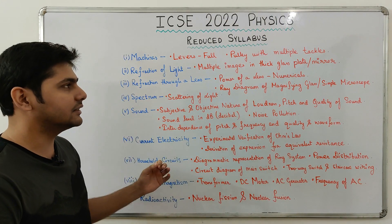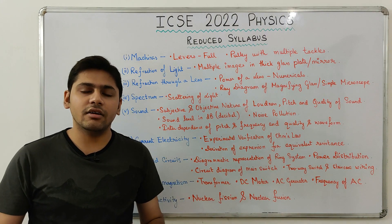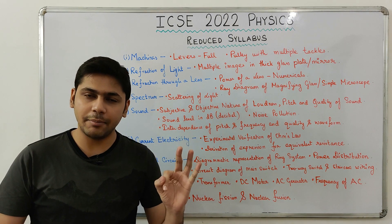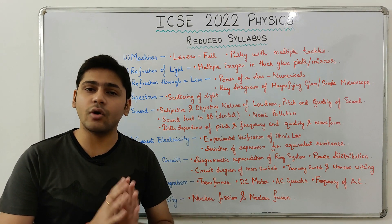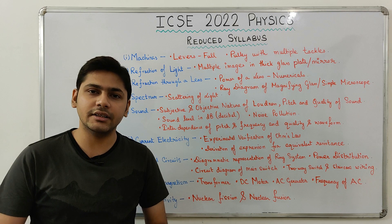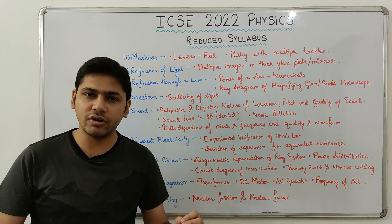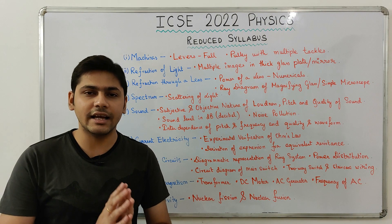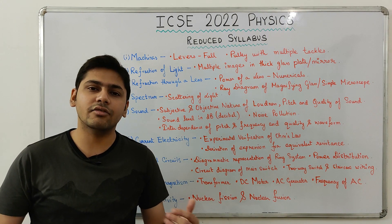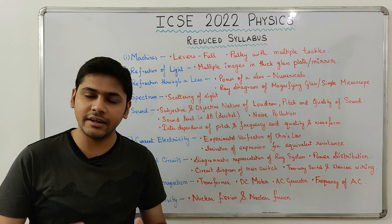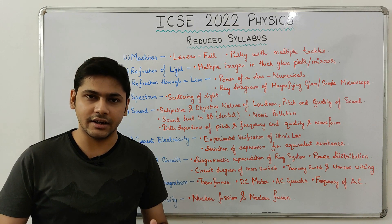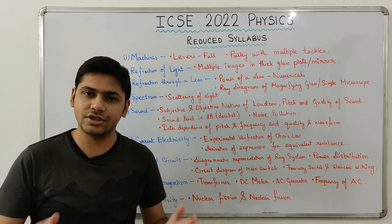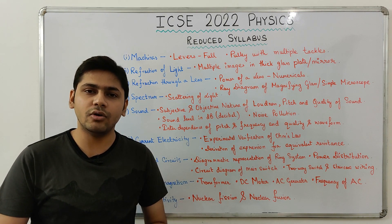The reduced syllabus for Physics — in total from nine chapters there has been some reduction. From three chapters of Physics there have been no reductions. These chapters are: the first chapter, Force; the second chapter, Work, Power and Energy; and the chapter Calorimetry. Other than these three, there have been reductions in the remaining chapters, so let's check them out one by one.